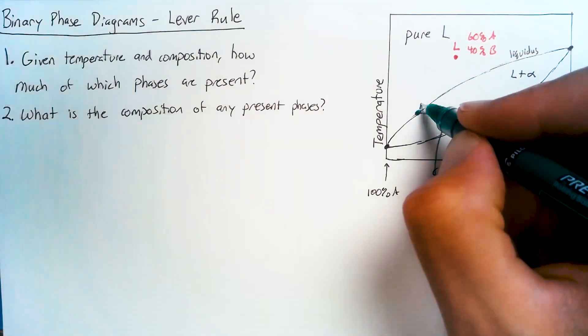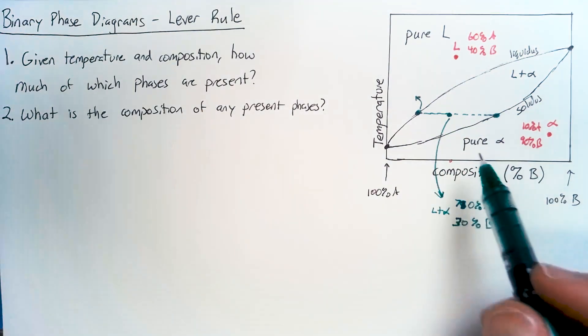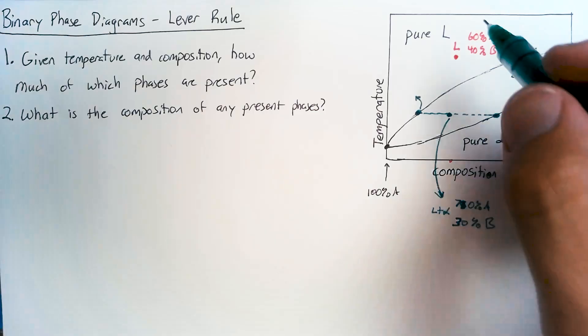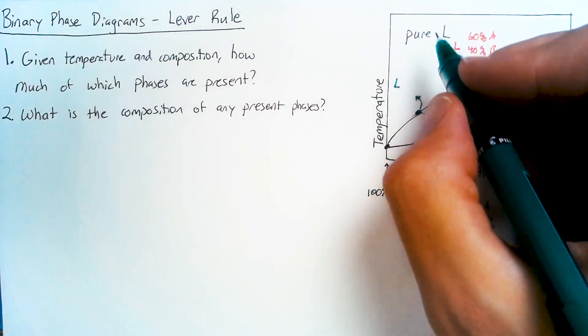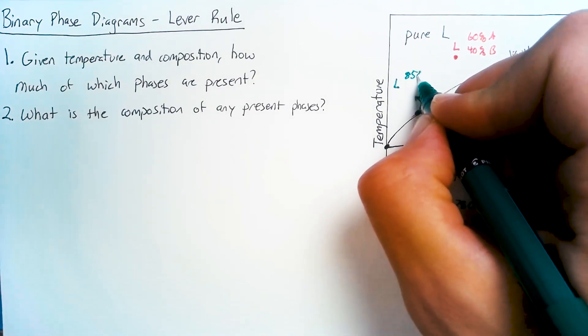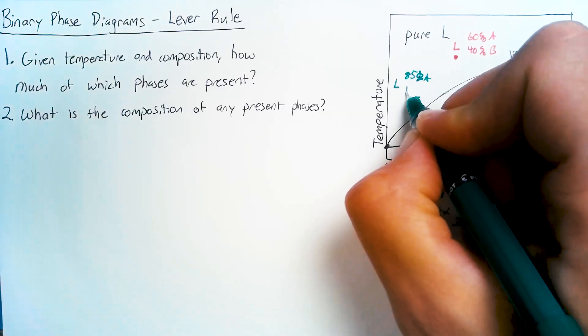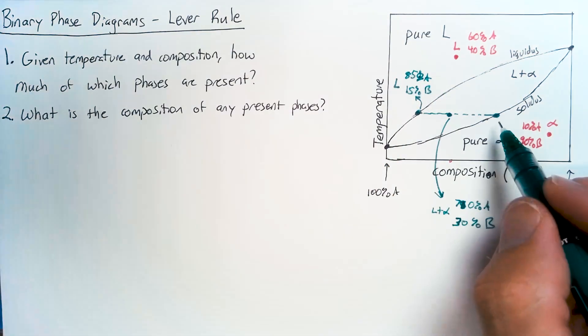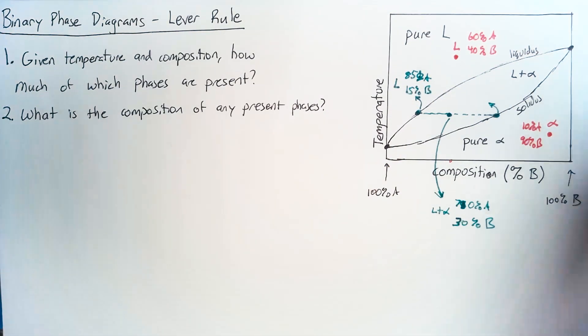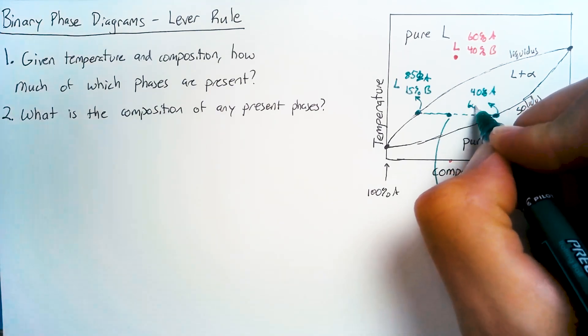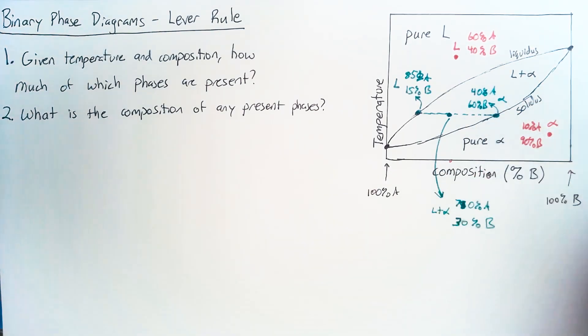The liquid that makes up that overall phase is going to be 85% A and 15% B. And the solid is going to be roughly 40% A and 60% B.